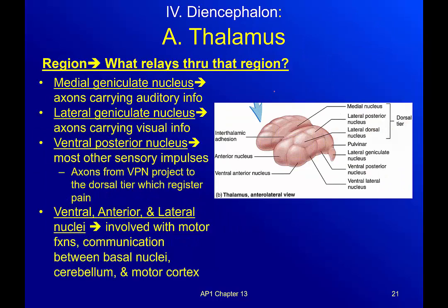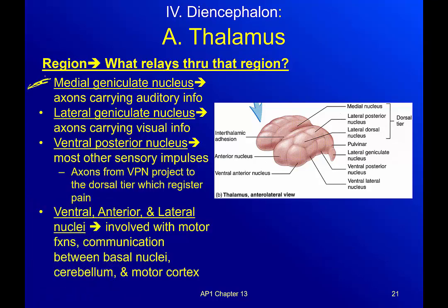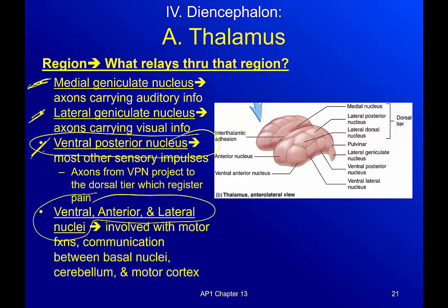So what relays through which region? The medial geniculate nucleus carries auditory information — sound. The lateral geniculate nucleus carries visual information — vision. The ventral posterior nucleus handles most other sensory impulses: things like pain, touch, pressure, and itch. The ventral anterior and lateral nuclei are involved with motor functions — in other words, movement. If I want to move my arm, this is my relay center.